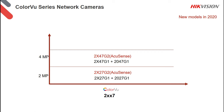When it comes to the ColorView, you can see the naming conventions — it ends with a 7 at the back, and there's a G1 and a G2. As mentioned, the G2 means the ColorView cameras now also include the AccuSense function. So you get two functions in one with this range of cameras.